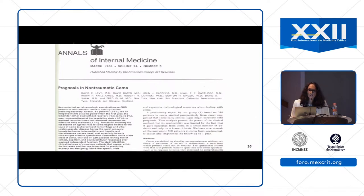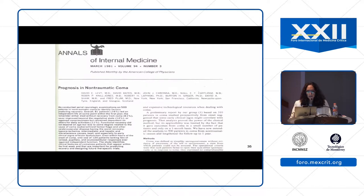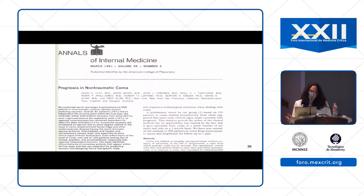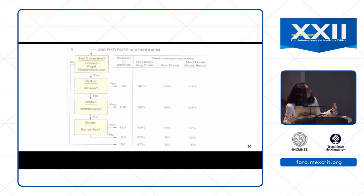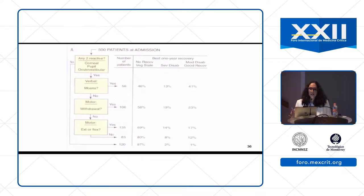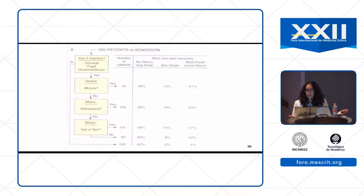The original publication about prognosis in non-traumatic coma came out in 1981 — this publication by Levy. The original cardiac arrest outcome and hypothermia protocol was based off this paper. They looked at about 500 patients in non-traumatic coma, with diagnoses including subarachnoid hemorrhage, ischemic stroke, hepatic encephalopathy, and hypoxic ischemic injury. They found that if any two brainstem reflexes — corneal, pupillary, and ocular vestibular — were not reactive, outcomes were really poor: 97% of these patients did not survive.